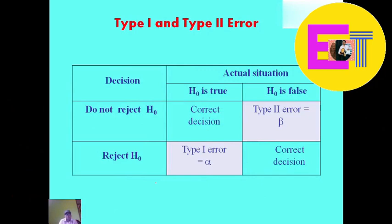On the following table we can understand the concept of type 1 and type 2 error. You can see on the right side the actual situation is given, whereas on the left side the decision is given.